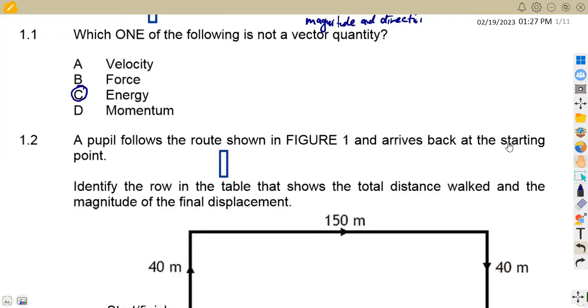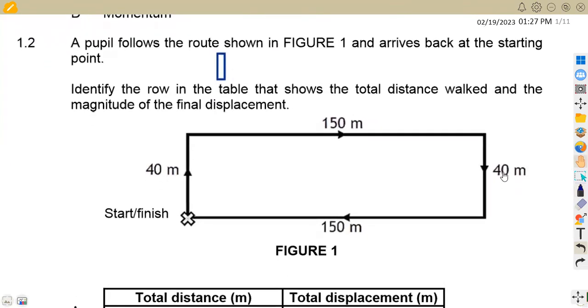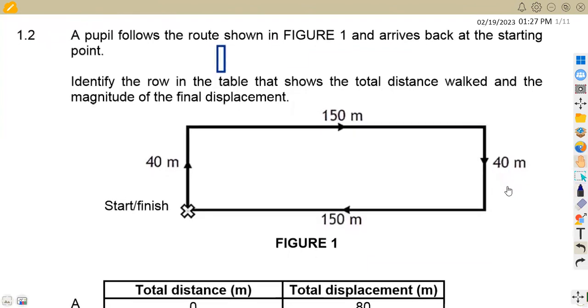A pupil follows the route shown in Figure 1 and arrives back at the starting point. Identify the row in the table that shows the total distance and the magnitude of the final displacement.